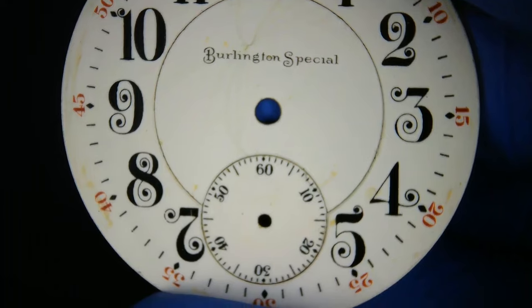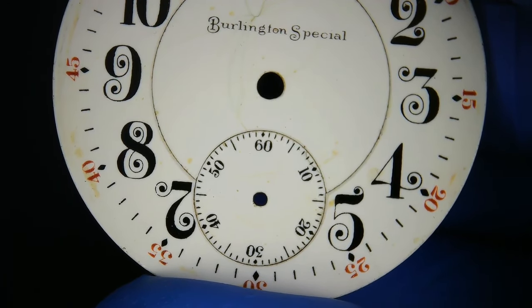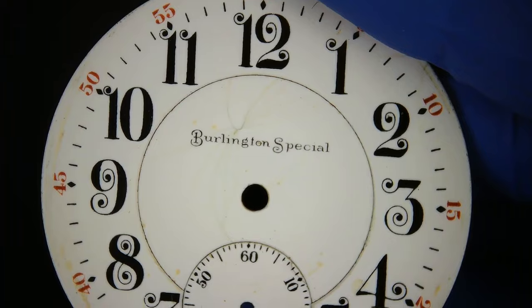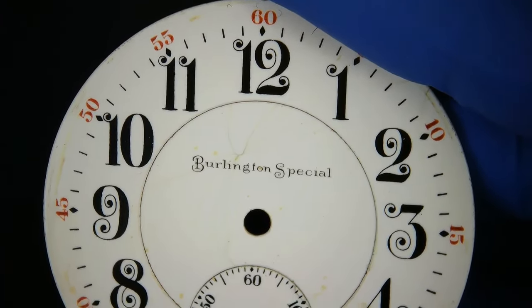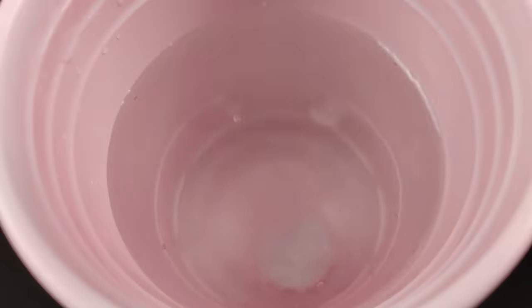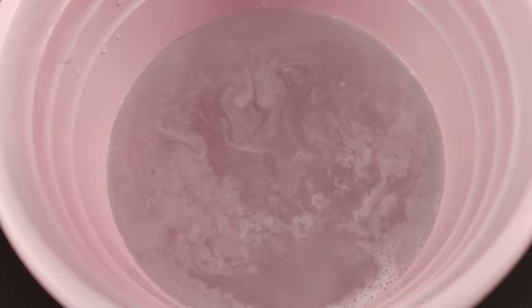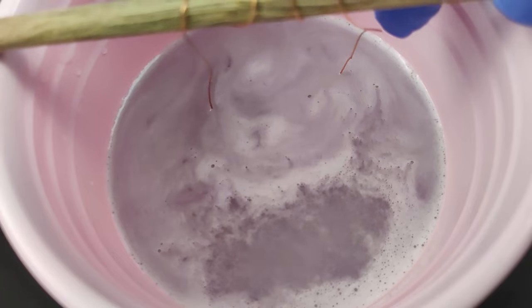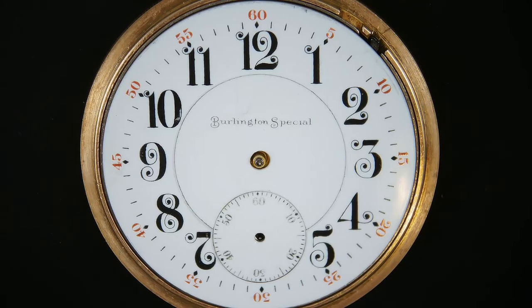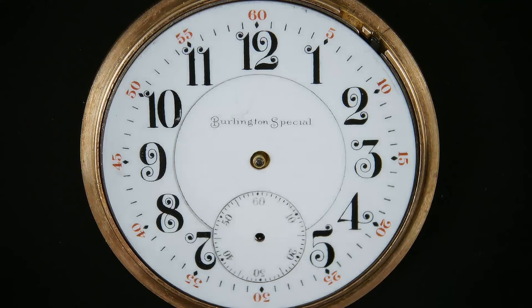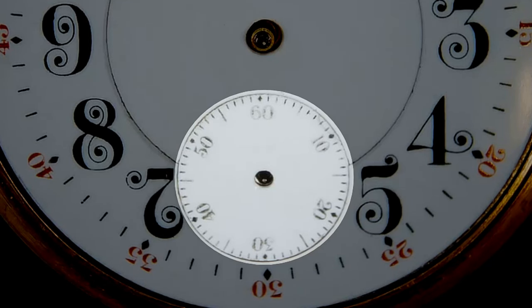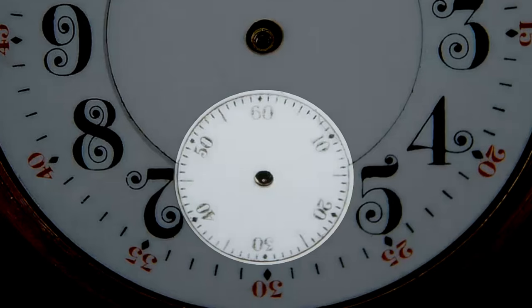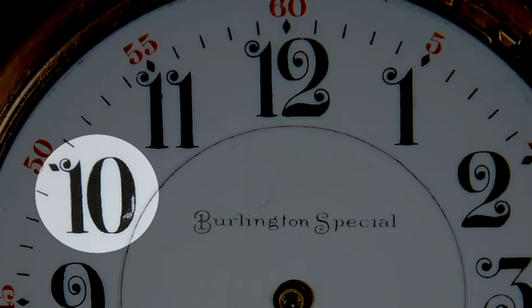So this dial has certainly seen better days. A nice relaxing bath and dentric cleaner should brighten this up. It may sound strange to use dentric cleaner, but these dials are made of enamel. And I like to suspend the dial on brass wire coiled around a dowel. I'll let that soak for eight hours. So some of the dial markings faded during the bath. My guess is that the dial was touched up with paint at some point. In the future, I'll try pre-testing an inconspicuous part of the dial prior to cleaning.